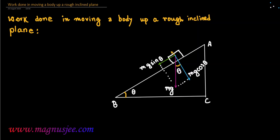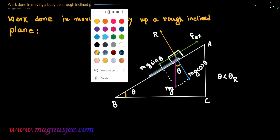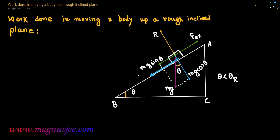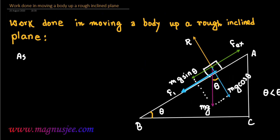We can draw the complete diagram showing normal reaction R, which acts perpendicular to the inclined plane AB. The angle of inclination theta is less than theta R, the angle of repose. An external force Fex is applied on the body to move it up the inclined plane. In that case, limiting friction FL will come into play down the inclined plane on the surface in contact.